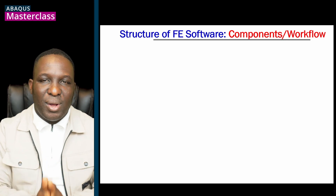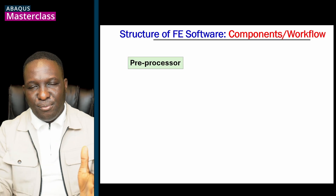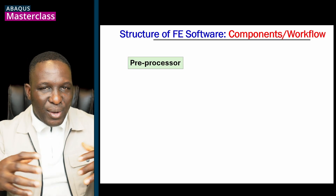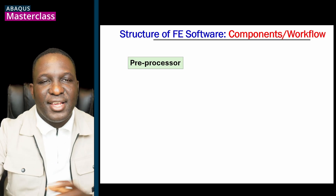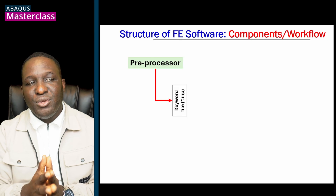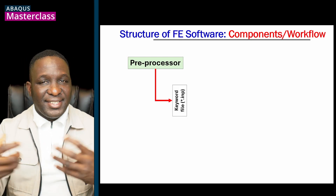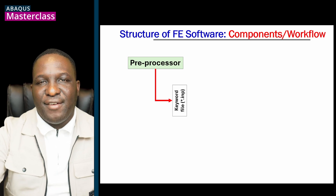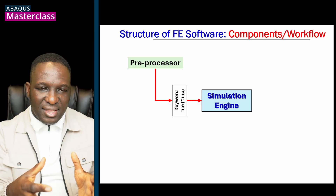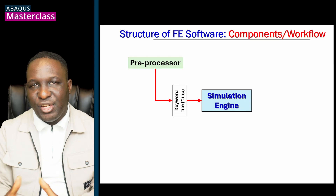This is not just unique to Abacus — it applies to every FE solver. The first thing we have to think about when you come to an FE environment is the pre-processor. This is an environment where you pre-process the content before you start sending it to the simulation to run. The output from the pre-processor is usually a keyword file — a text file containing a set of instructions to drive the FE simulation. In the case of Abacus, this is called an input file, and from that you go into the simulation engine.